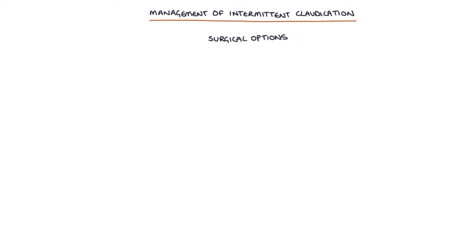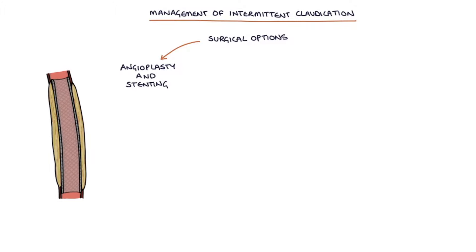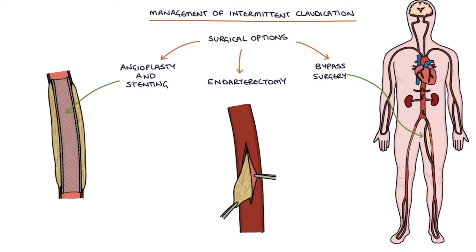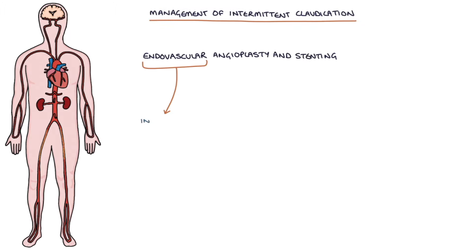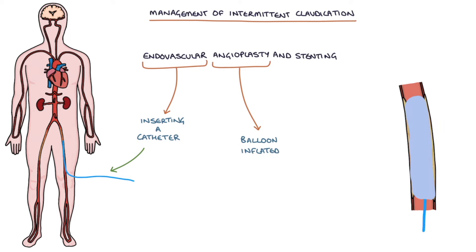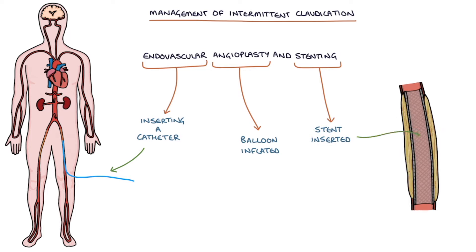Surgical options for intermittent claudication and peripheral arterial disease include endovascular angioplasty and stenting, endarterectomy — which involves cutting the vessel open and removing the atheromatous plaque — and bypass surgery, which involves using a graft to bypass the blockage. Endovascular angioplasty and stenting involves inserting a catheter through the arterial system under X-ray guidance, inflating a balloon at the point of stenosis, and inserting a stent to keep the artery open. Endovascular treatments have lower risks but might not be suitable for more extensive disease.